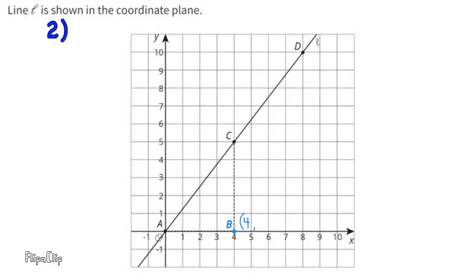Problem number 2. Line L is shown in the coordinate plane. A. What are the coordinates of B and D? The coordinates of B are (4,0), and the coordinates of D are (8,10). B asks, is the point (16,20) on line L? Explain how you know.